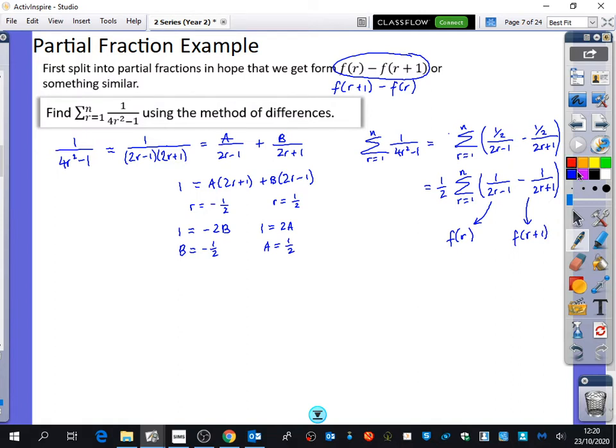So if we're saying here that f of r is 1 over 2r minus 1, if I do f of r plus 1, I'll be replacing r with r plus 1, which is 1 over 2r plus 2 minus 1, which is 1 over 2r plus 1. So it is in the form, the traditional form of f of r minus f of r plus 1. It doesn't look as obvious because there's a gap of 2, but the gap of 2 is counted by the 2, the factor of 2 as well.